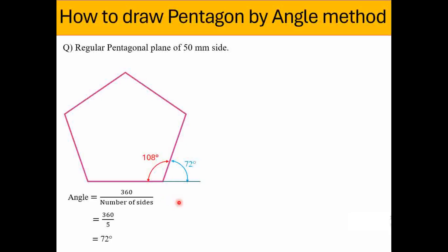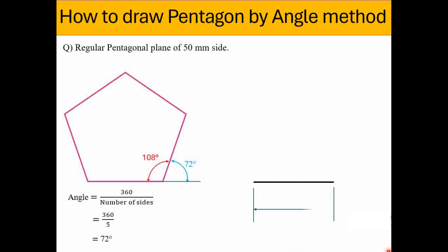So let's see step by step how to draw the pentagonal plane. Initially we have to draw a horizontal line — as per the requirement we can draw a vertical line also, but we are learning the basic procedure. So draw the first horizontal line of the given side, that is 50 mm.